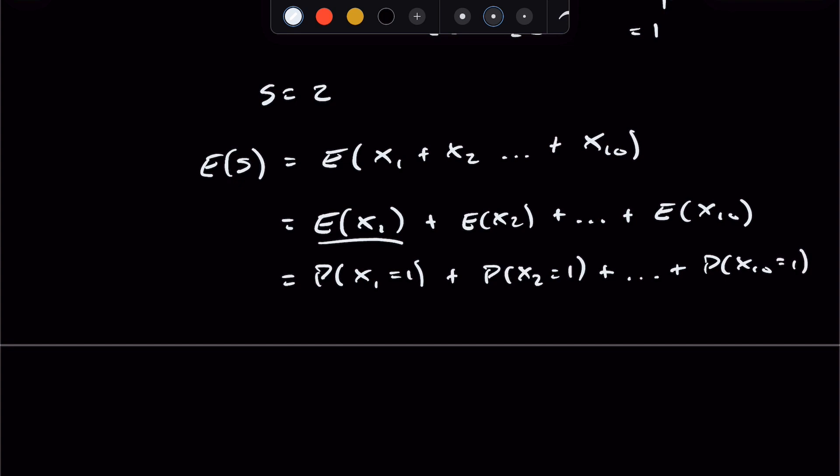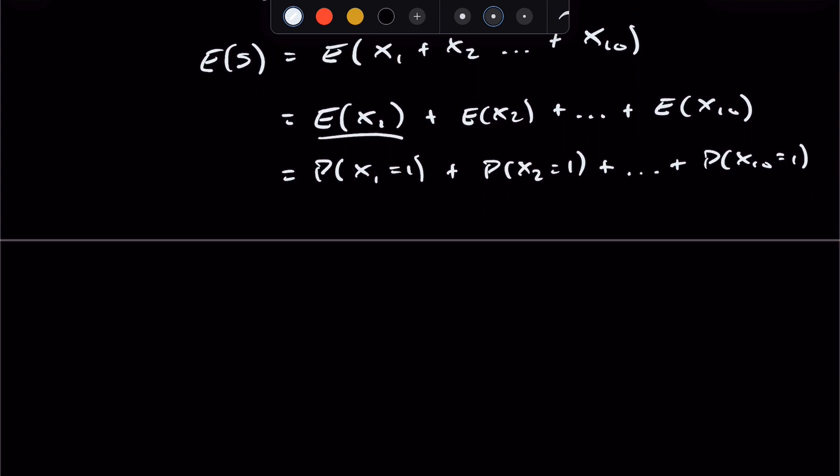Furthermore, the expectation of an indicator random variable, a random variable that only takes on values 0 and 1, is simply equal to the probability of that random variable equaling 1. And again, this conclusion follows from the definition of the expectation.